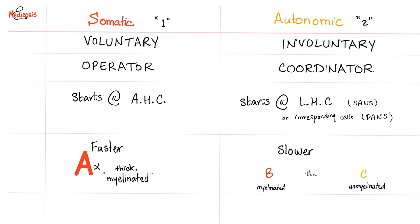Somatic fibers are voluntary; autonomic is involuntary. Somatic is an operator — just contract the muscle. Autonomic is a coordinator — do you want to increase or decrease your heart rate? Somatic starts at the anterior horn cell. Autonomic starts at the lateral horn cells. Why? Because somatic has to be faster. Somatic fibers are faster, so give them the best fibers ever — A-alpha fibers, thick and myelinated. Autonomic fibers get B and C, because we've used most resources for the somatic system. Economics is the scientific study of scarce resources which have alternative uses.